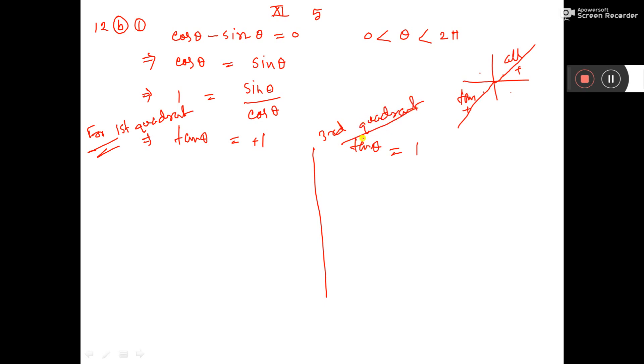Now see, first quadrant. Tan theta is equal to 1 means tan 45 degree. So theta is equal to 45 degree. This is the answer.